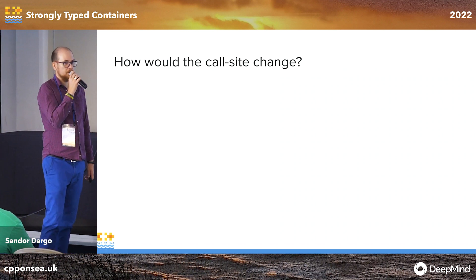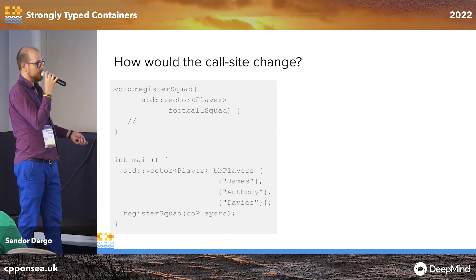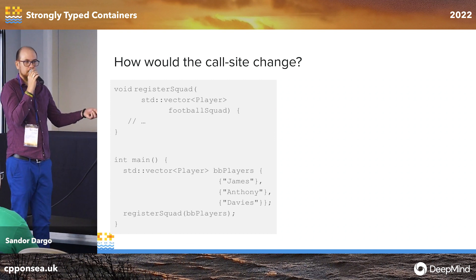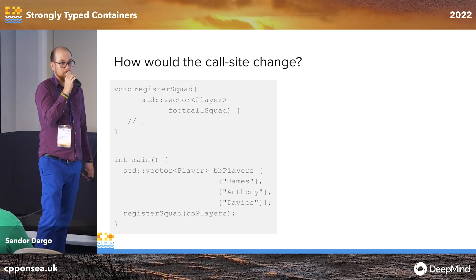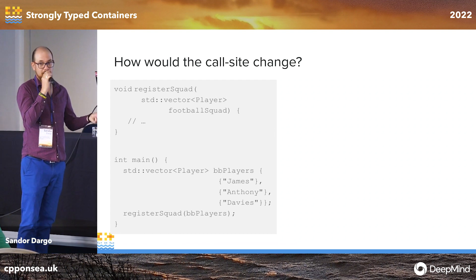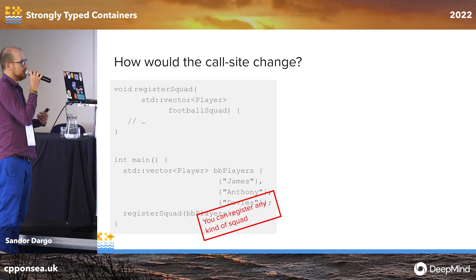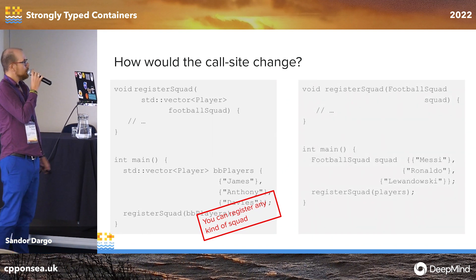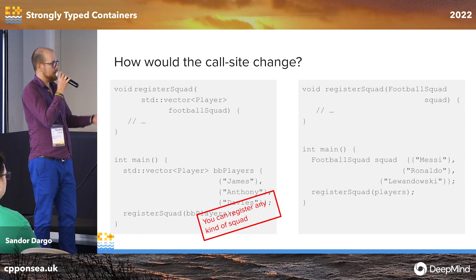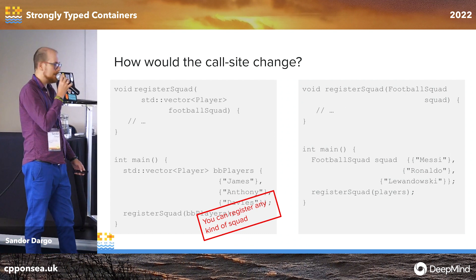Let's see how the call site would change. On the left side, we have a function 'register_squad' which takes a vector of players. According to the parameter name it's supposed to be a football squad, but we pass in basketball players. That's not what we want to accept — we really want football players. So to avoid registering just any kind of squad, we will take a FootballSquad with the strongly typed version.